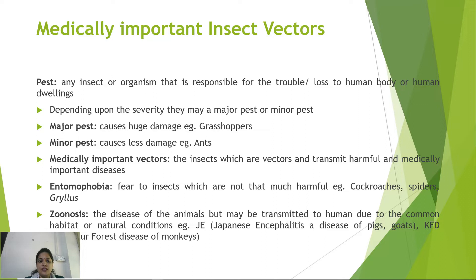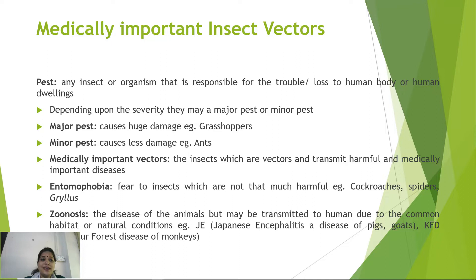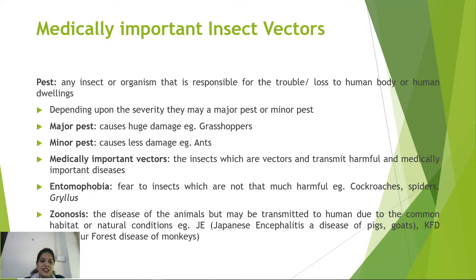To understand medically important insect vectors, we must differentiate between pests and vectors. Pests are any organisms responsible for trouble or loss to the human body or human dwellings — they can be major or minor pests depending on the extent of damage. Medically important vectors are insects that behave as vectors and transmit pathogens that can cause diseases. Entomophobia is the fear of insects.